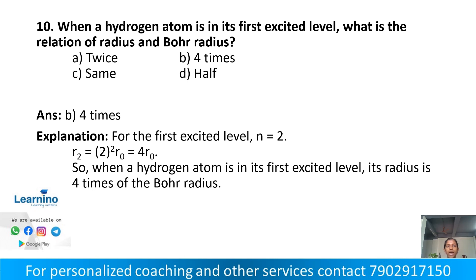When a hydrogen atom is in its first excited level, what is the relation of the radius to the Bohr radius? The first excited level corresponds to n=2, so R₂ equals n² times R₀, which is 2² times R₀, giving 4R₀. The radius of the hydrogen atom in the first excited level is 4 times the Bohr radius. The answer is Option B: 4 times.